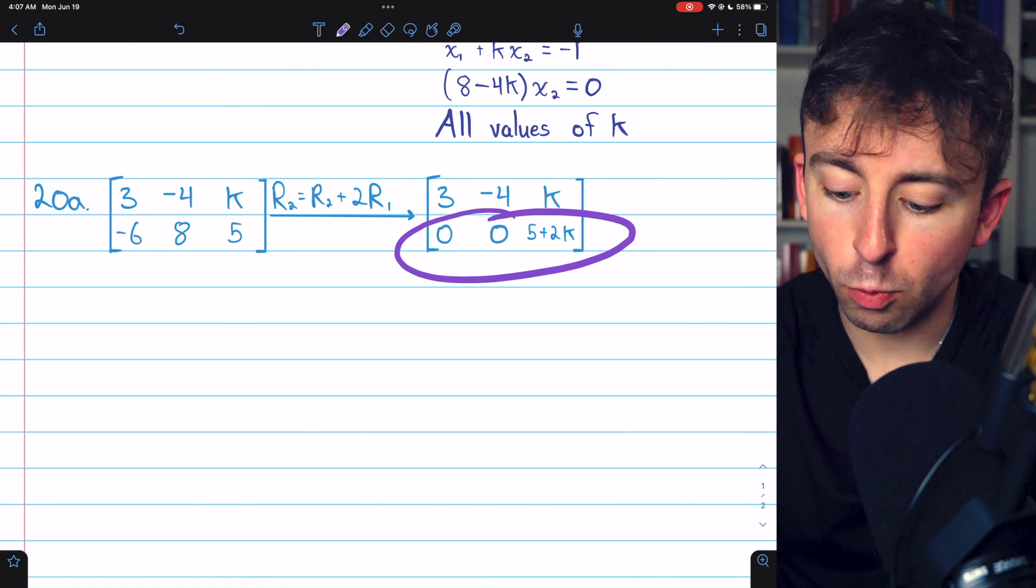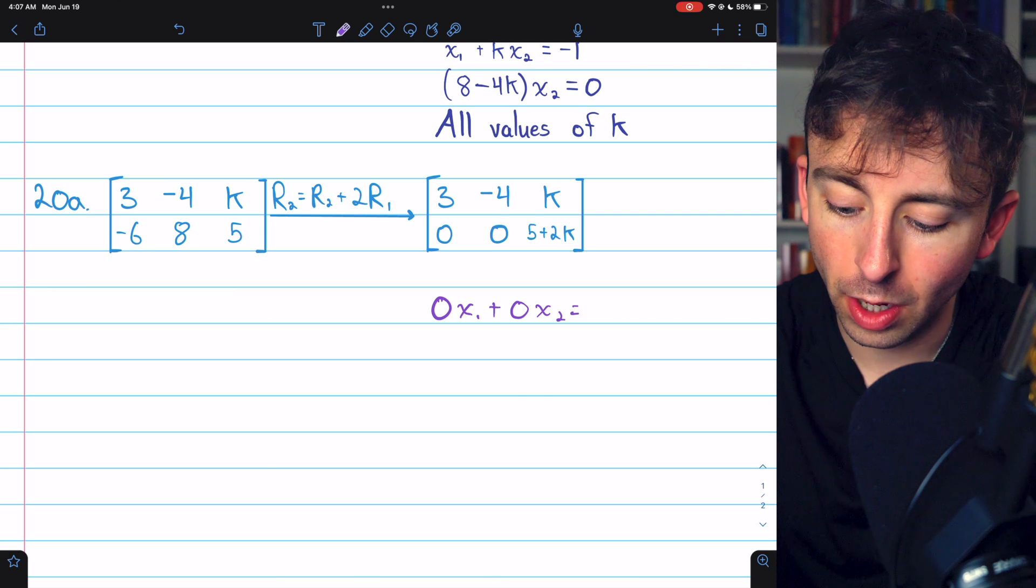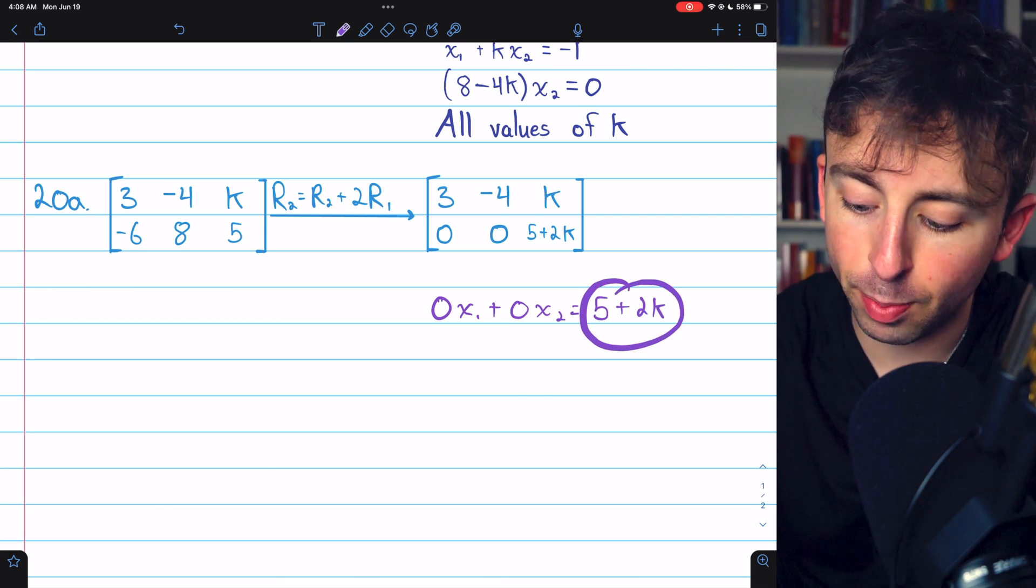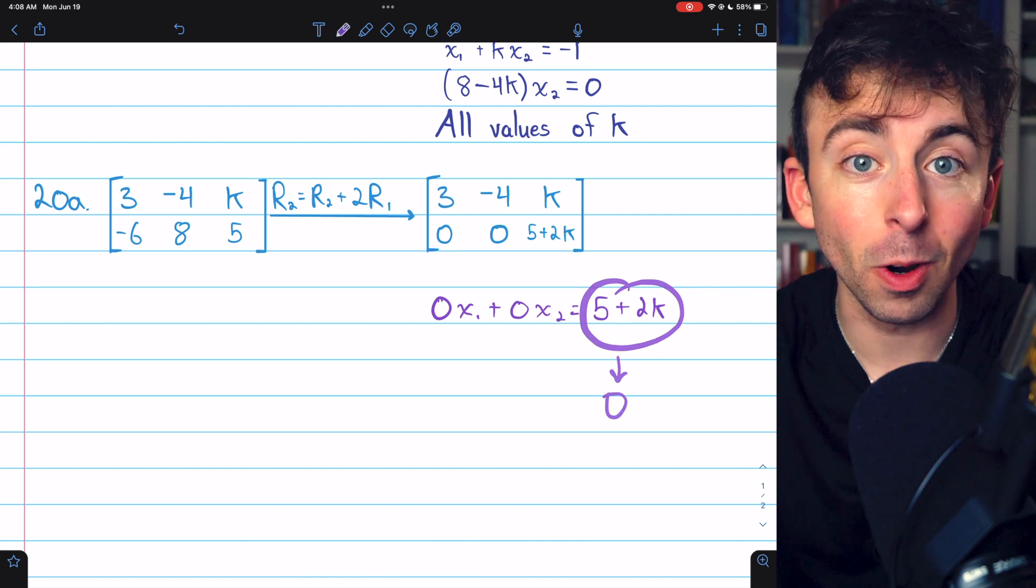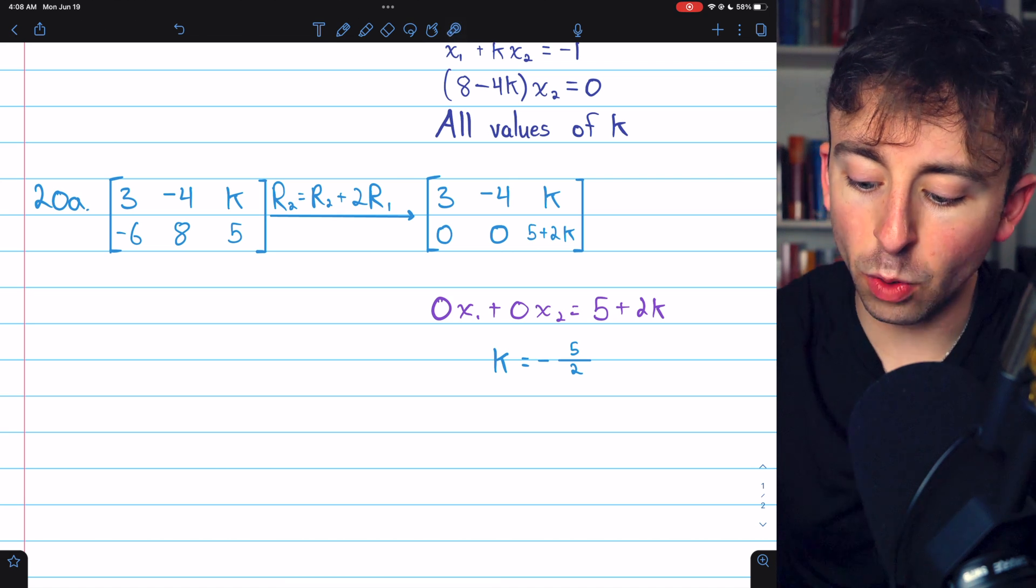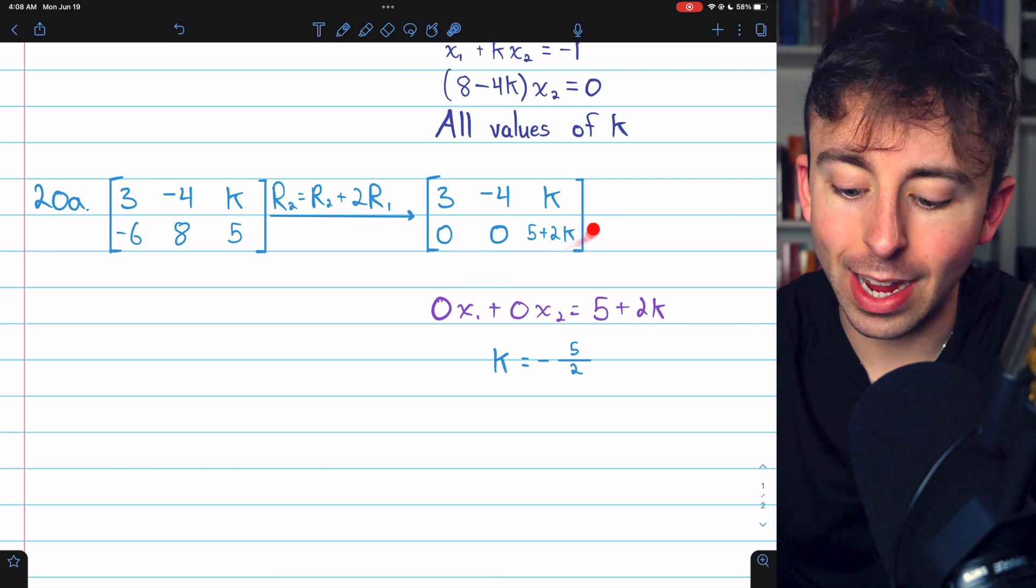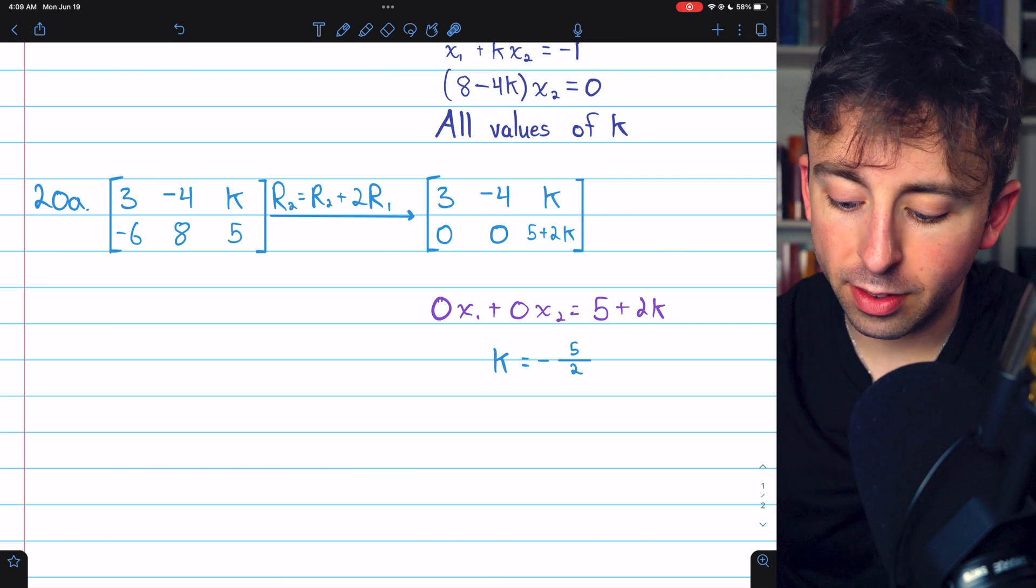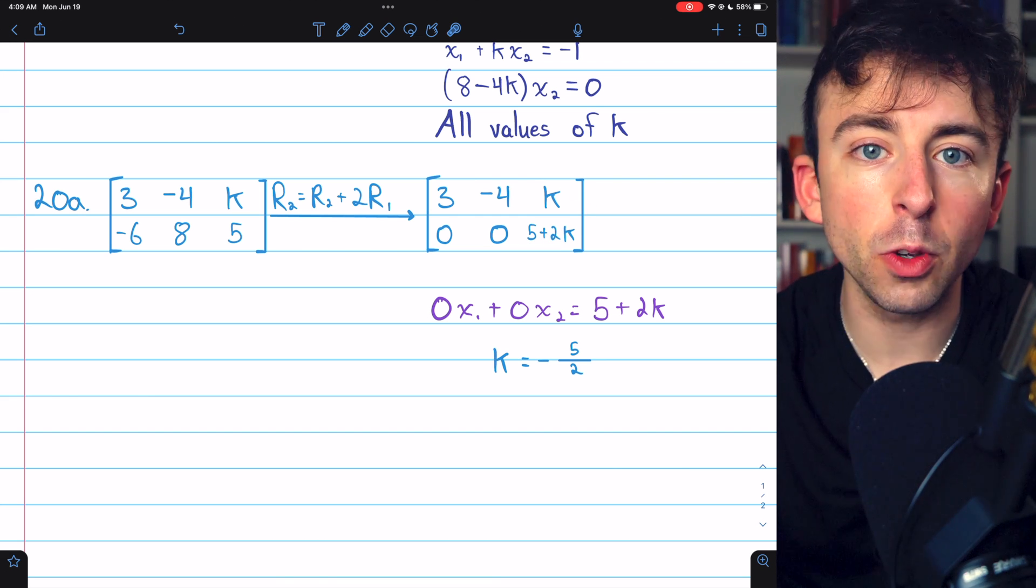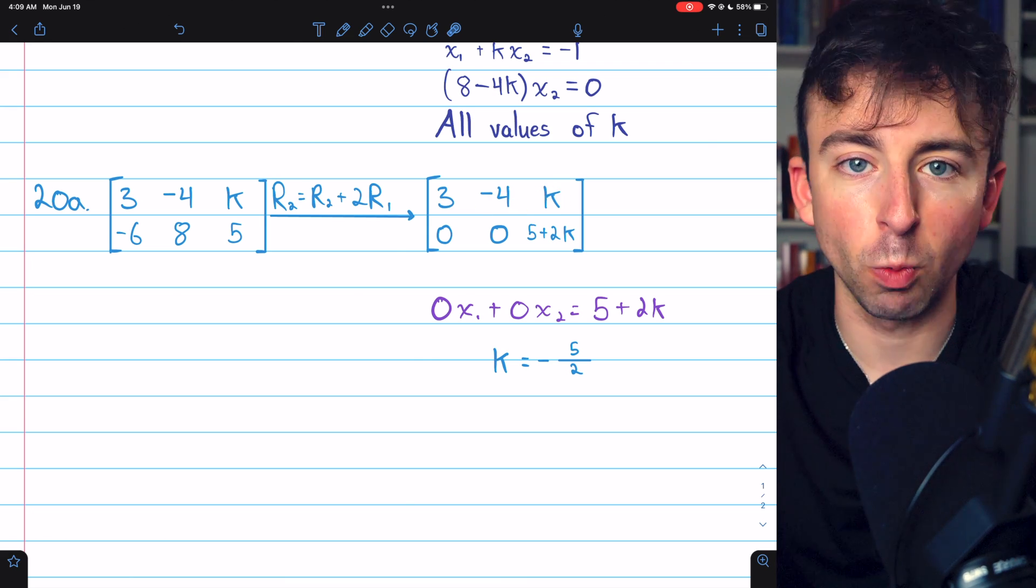Row 2 here corresponds to the equation 0x1 plus 0x2 equals 5 plus 2k, which of course means that 5 plus 2k needs to equal 0. And that forces k to be negative 5 halves. That's the only way that 5 plus 2k can be 0, which is what will be necessary to satisfy the equation implied by row 2. So this is the one value of k that makes the system consistent, and then once we have that value of k, there would be infinitely many possibilities for x1 and x2 to satisfy row 1.